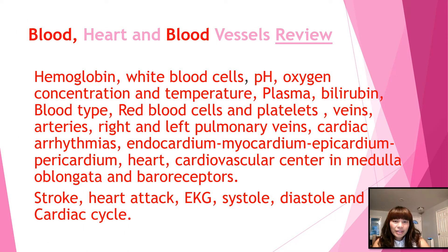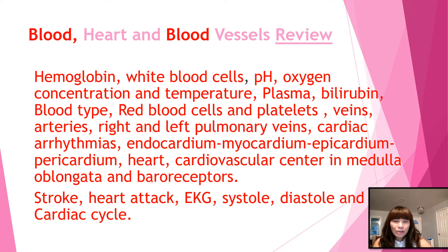In this PowerPoint we are going to go over some pointers about blood, heart, and blood vessels. It includes hemoglobin, white blood cells, pH, oxygen concentration and temperature, plasma, bilirubin, blood type, red blood cells and platelets, veins, arteries, right and left pulmonary veins, cardiac arrhythmias, endocardium, myocardium, epicardium, and pericardium, as well as the heart and cardiovascular center in the medulla oblongata and baroreceptors.